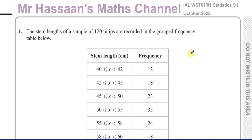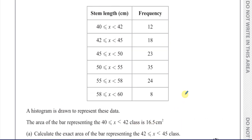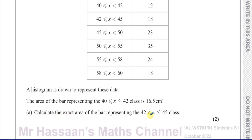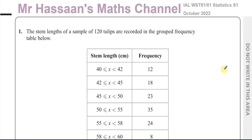The first question in this paper is about a grouped frequency table. It says the stem lengths of a sample of 120 tulips are recorded in the grouped frequency table below. You've got the stem lengths and frequencies. A histogram is drawn to represent these data, and the area of the bar representing the 40 to 42 class is 16.5 square centimetres. We've got to calculate the exact area of the bar representing the 42 to 45 class. In histograms, the area of the bar is proportional to the frequency.